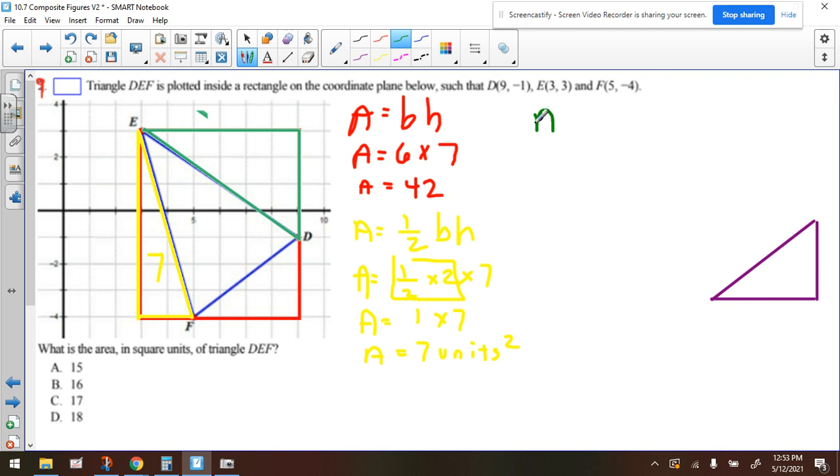The green triangle, we'll still use the formula, area equals half of the base times the height. Remember, the base and the height have to be perpendicular to each other, so that means we can use this line, and this line is our base and height.